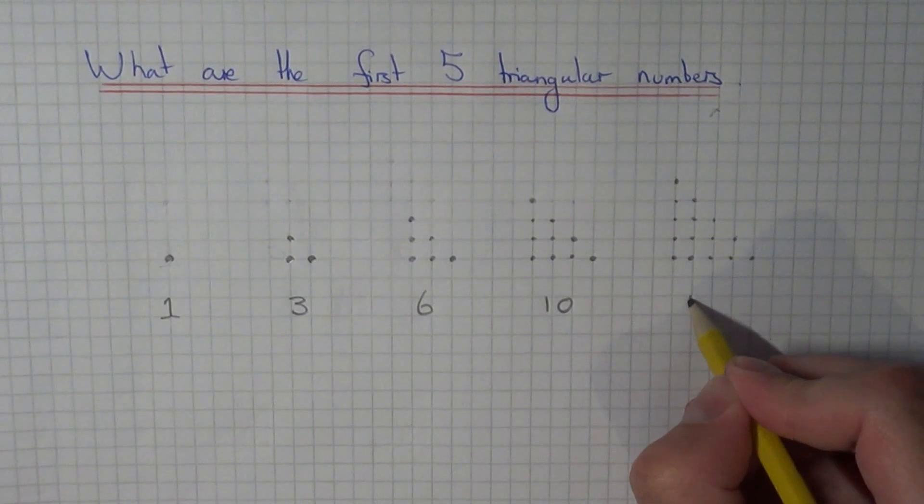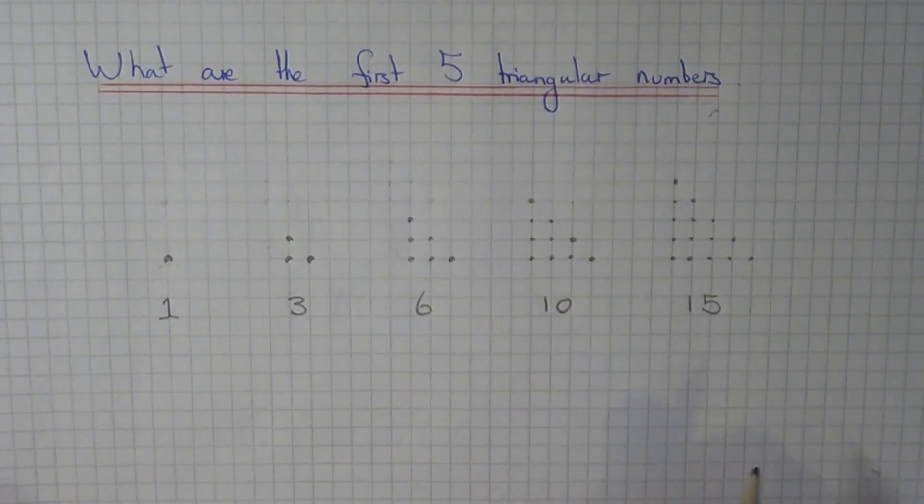And we just need to add one more diagonal row of dots. This is an extra five dots, so our fifth triangular number is 15.